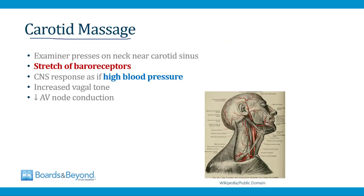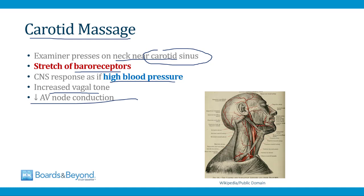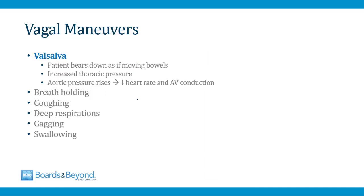Carotid massage is performed by pressing on the neck near the carotid sinus, which stretches baroreceptors there. The brain interprets that stretch as high blood pressure and responds by decreasing sympathetic activity and increasing parasympathetic activity, leading to more vagal tone. Since the vagus nerve innervates the heart and AV node, this slows conduction in the AV node. Clinically, a patient in the ER with an SVT and palpitations can have their arrhythmia broken simply by lying back while the examiner presses on their neck — in a few seconds the arrhythmia breaks and sinus rhythm returns.